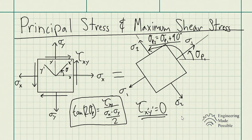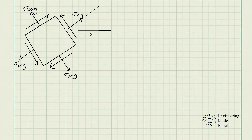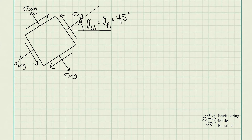Moving on to the maximum shear stress — at what angle will it develop? This element is rotated to where the shear stress is maximum, denoted as theta S1. An important relationship: theta S1 is equal to theta P1 plus 45 degrees. So the angle where shear stress is maximum is offset by only 45 degrees from where the principal stresses occur.